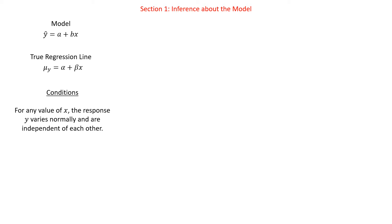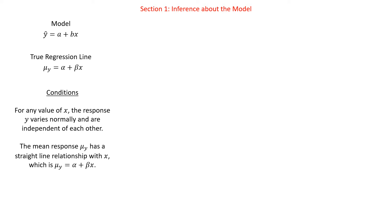I'll give you a poorly drawn sketch. The mean response mu of y has a straight line relationship with x — mu of y equals alpha plus beta x. So if the true relationship is not linear, trying to fit a line to the relationship is probably not going to be very effective. This is just saying that the true relationship does actually need to be linear. And then the standard deviation of y, sigma, is the same for all x, and sigma is unknown — very rarely do we actually know the standard deviation.